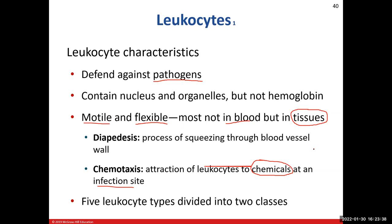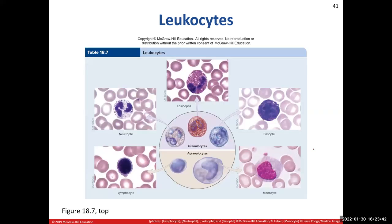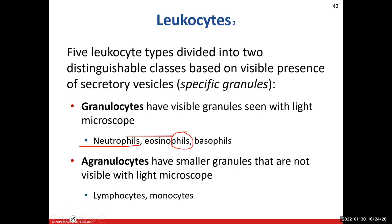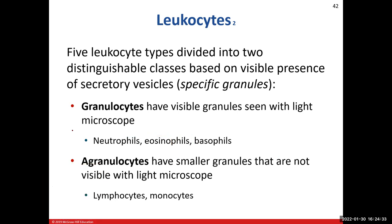We break leukocytes down into two classes: granulocytes and agranulocytes. If you're a granulocyte, you can see small dots or granules inside the cells on a light microscope. If you can see those specks, those cells are classified as granulocytes. If you can't see the granules on a light microscope, they fit into the agranulocyte classification. The three granulocytes are any cell ending with '-phil' or '-phils': neutrophils, eosinophils, and basophils. The agranulocytes are our lymphocytes and monocytes — easy to remember because they end in '-cyte.'